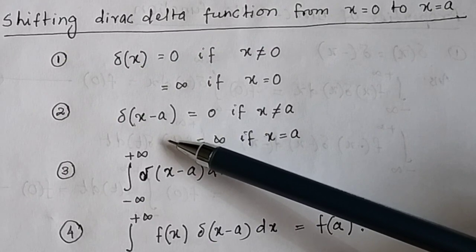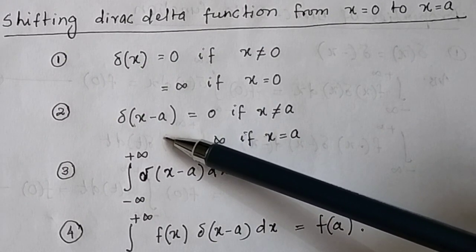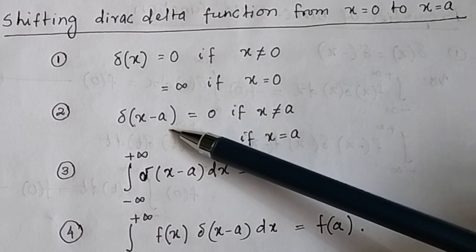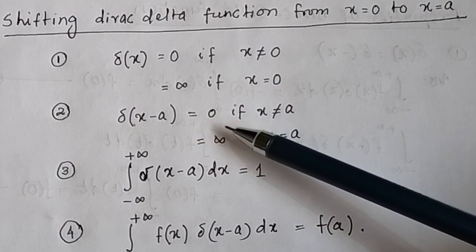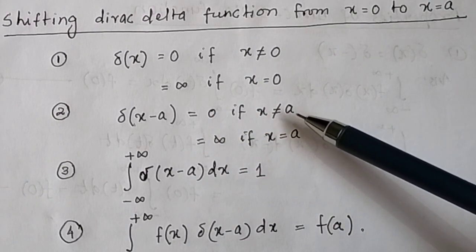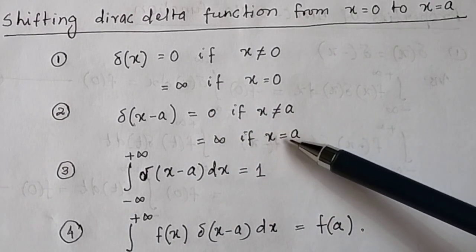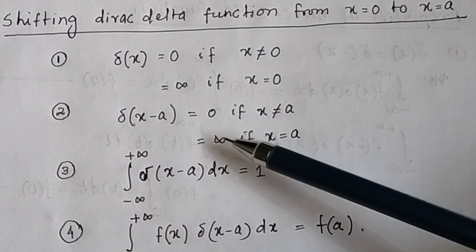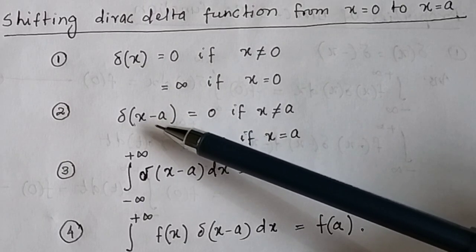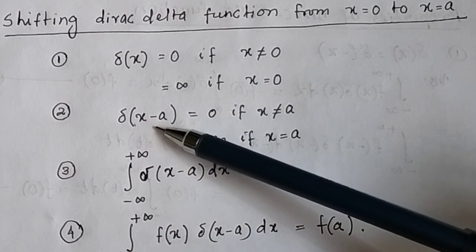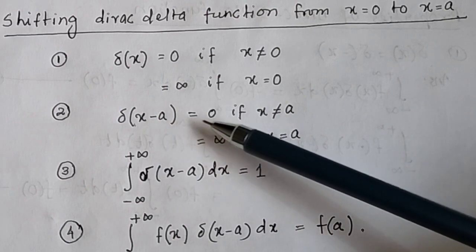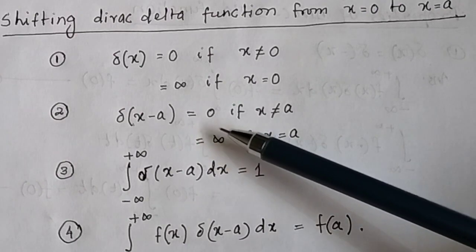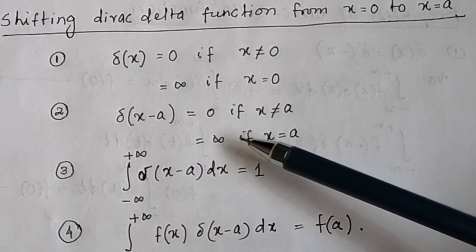When you shift the value of x from 0 to a, the Dirac delta function will be delta(x minus a), and that will be equal to 0 if x is not equal to a. But when x is equal to a, the Dirac delta function will be equal to infinite, because at x equal to a, this will be equal to delta(0). So at 0, the Dirac delta function has a maximum value or a pulse, as we have defined in the previous video.